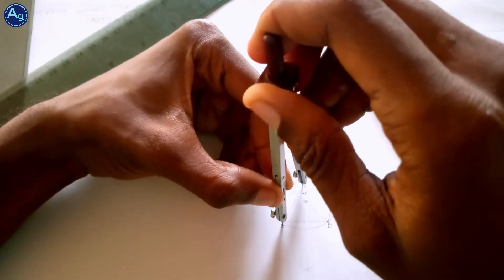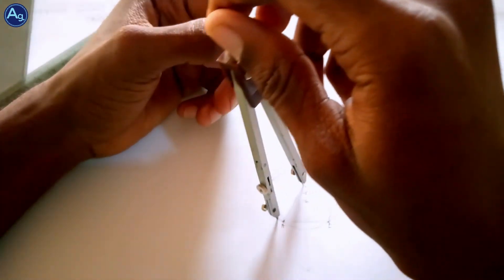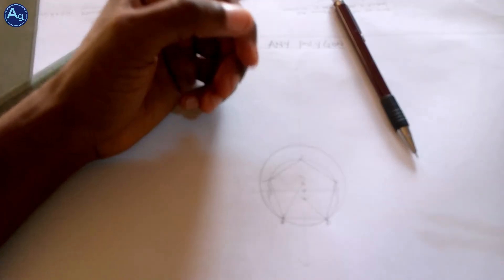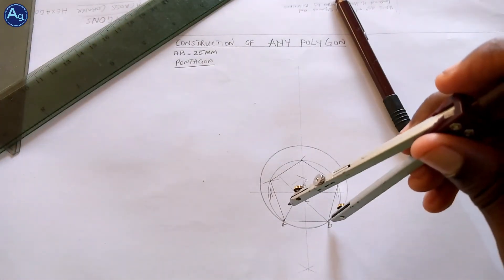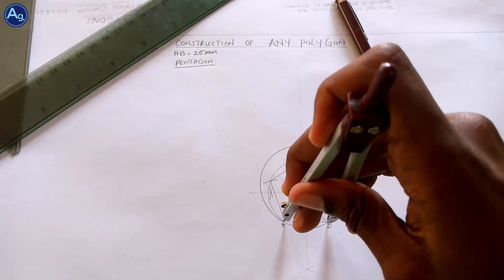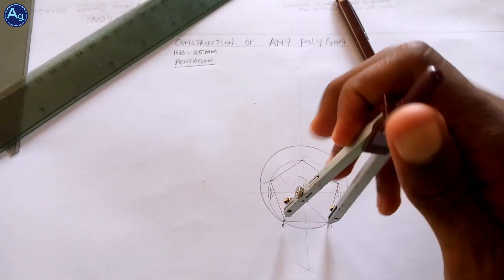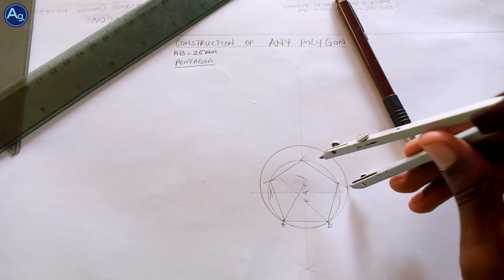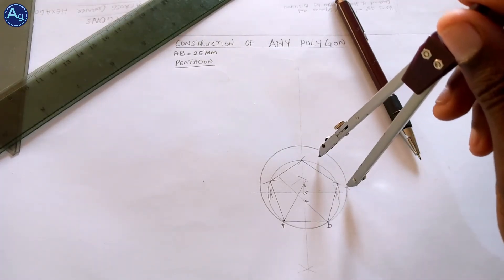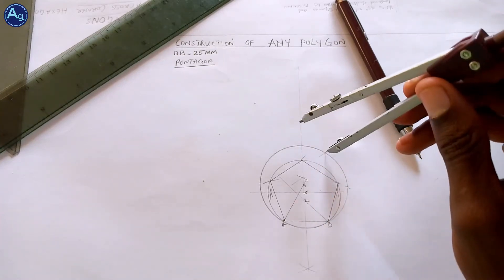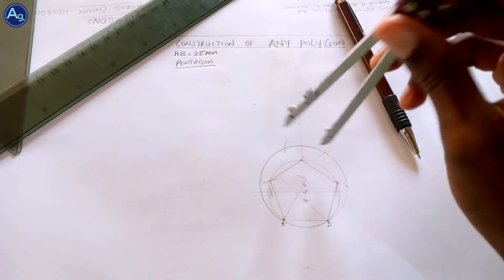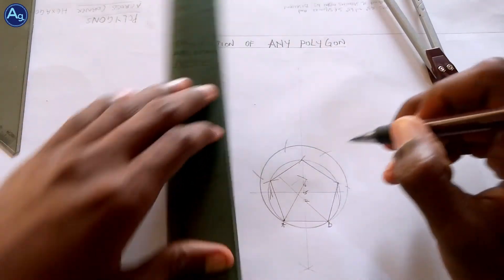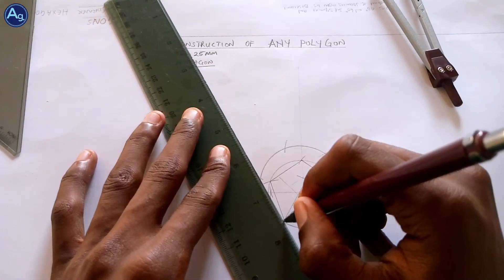And draw a circle. So using the same radius, A B mark on this circle. Here they have one side, one, two, three, four, five, and six. So all you have to do again is to join them.